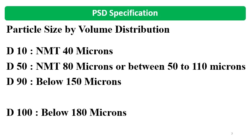In this example: D10 is 40 microns, D50 is 80 microns or between 50 to 110 microns, and D90 is below 150 microns. For some APIs, D100 is also considered — here given as 180 microns, meaning 100% of particles have a particle size below 180 microns. When setting the specification, consider different API PSD trends from the API supplier, the effect of that API PSD on your drug product, equivalence and stability, and processability. Specifications are derived based on product requirements.